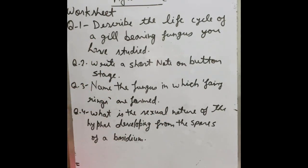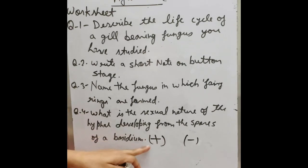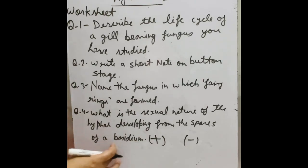These strains fuse together and form the dikaryotic mycelium which completely forms Agaricus. So you can describe the whole process: primary mycelium, secondary mycelium, and forming the basidium.